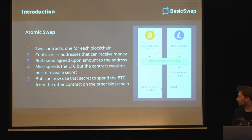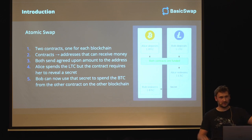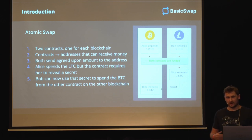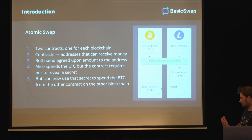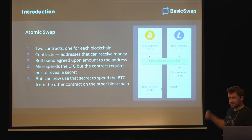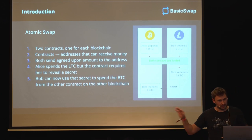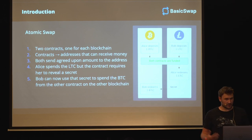So what's an atomic swap? We'll start off with a little example. We have Alice and she has one Bitcoin and she wants to swap it with Bob for one Litecoin. So what they do is they make two contracts, one on each blockchain. This contract contains the same agreements and the same conditions. And these contracts then get transformed into addresses that can receive money. So Alice will deposit her Bitcoin into an address that is under control of this contract. Bob does the same with Litecoin on the Litecoin side. Both send the agreed upon amount to the address and then we say that both contracts are funded.